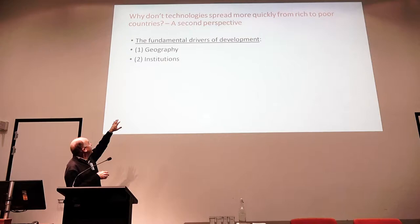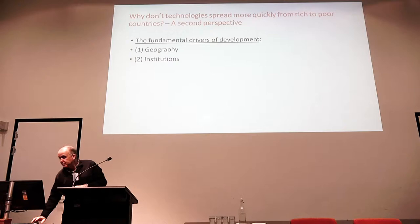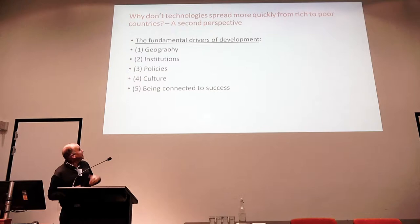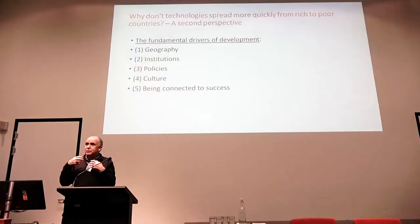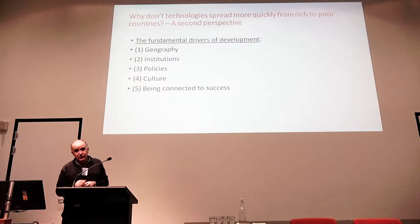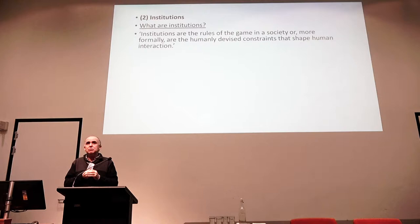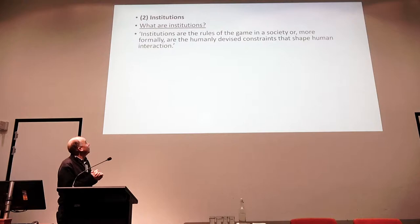Another fundamental driver is institutions. There are also other ideas about fundamental drivers: countries with differing policies, culture, or being connected to success. This is the idea that some countries like Australia have benefited from being colonised by one of the frontier developers of the time, making it much easier for technologies to spread. Most of the emphasis with economic historians thinking about causes of development recently has been on institutions — for example, Daron Acemoglu and Jim Robinson's book Why Nations Fail, which makes the case that institutions are the main reason why countries become rich and countries become poor.